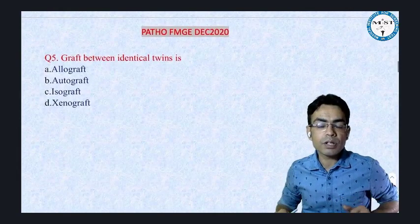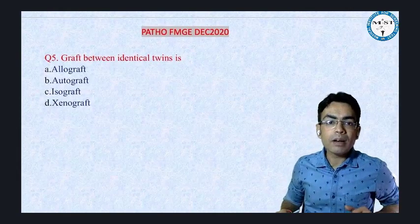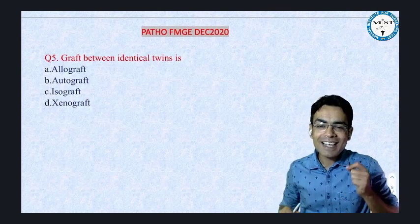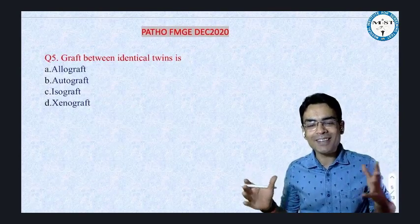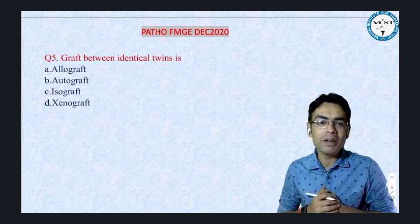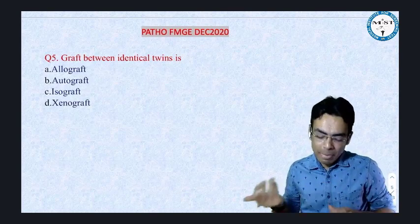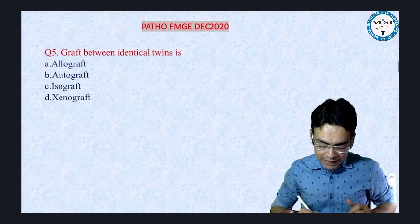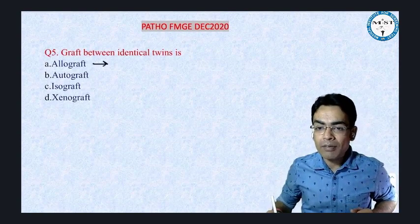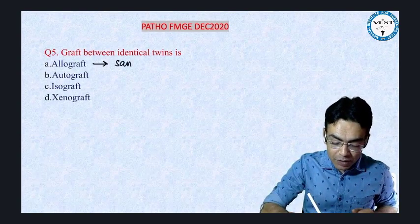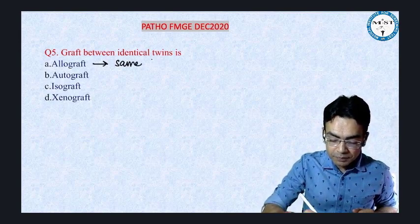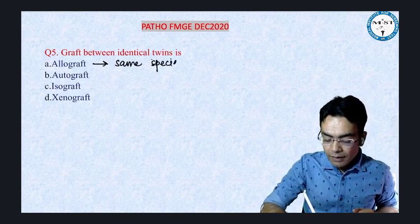Moving to question number five: graph between identical twins. Out of all the immunity questions, we are getting such an easy question. We have discussed many times — allograft means same species.